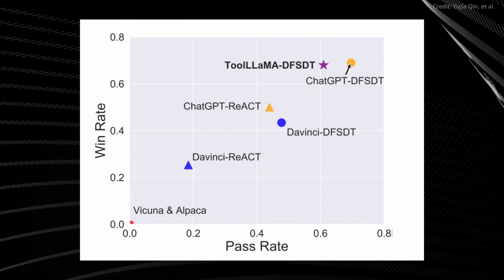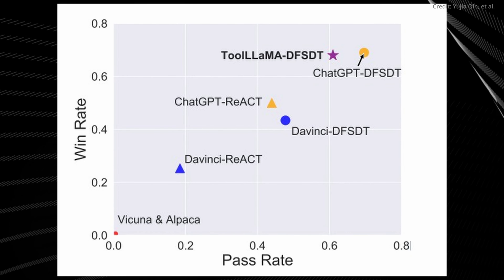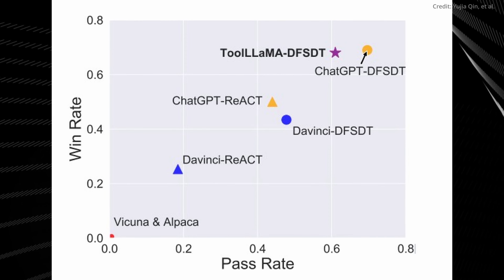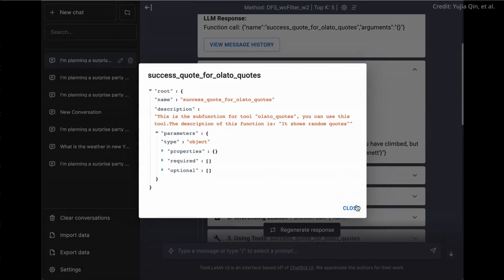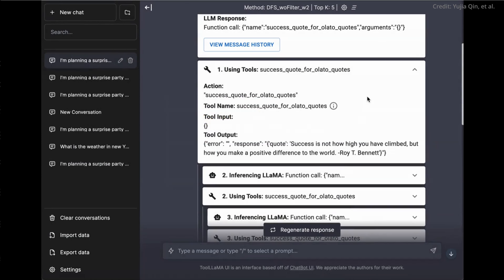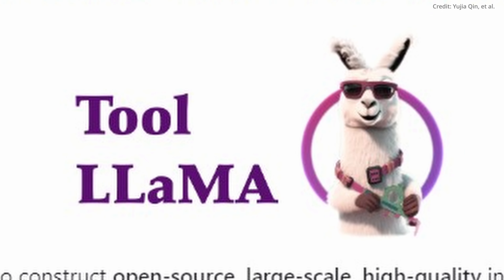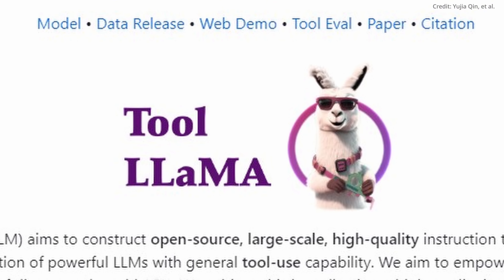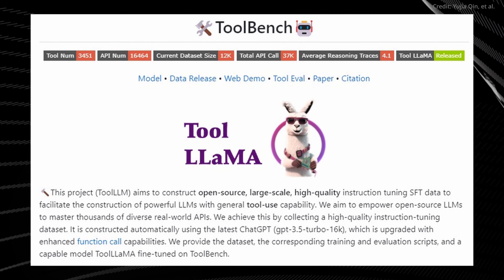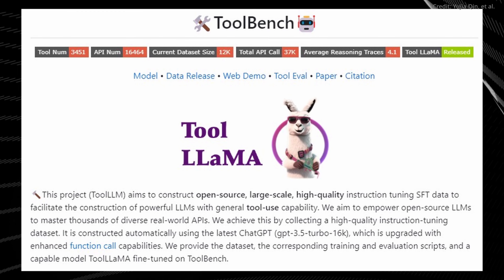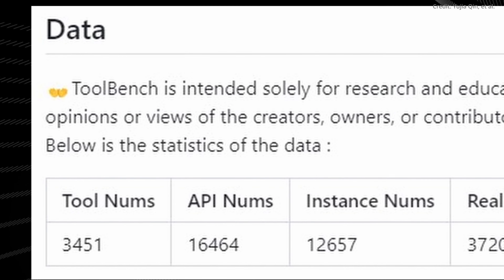Focusing on further improving Tool Llama's capabilities, efforts were deployed toward training a neural API retriever. This ingenious software automatically selects the relevant APIs for each statement from the astounding pool of over 16,000 APIs. Its integration with Tool Llama equates to an automatic pipeline for utilizing complex tools without the necessity for painstaking manual API selections.